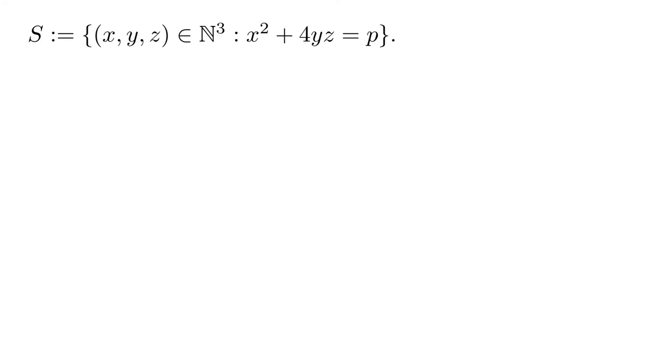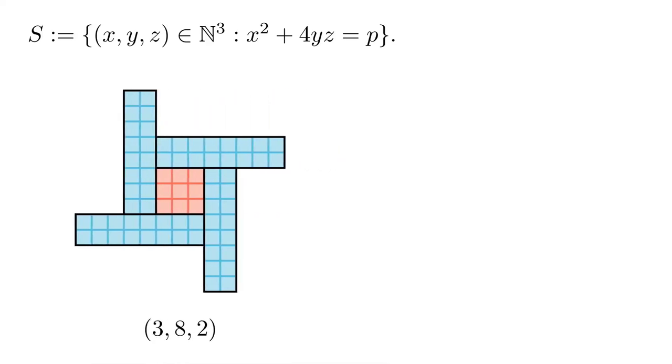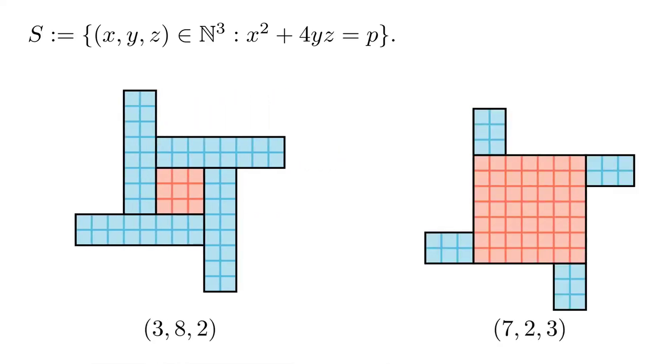So I've got this set S. It's triples of natural numbers, (x, y, z) with the property that x squared plus 4yz equals that prime p. And I want to interpret that set geometrically. So I build a square of side length x, an x by x square. That's the x squared term. And then around this square, I'll place four rectangles. These rectangles are y by z rectangles. So the four rectangles correspond to the 4yz term. So I've put down p squares. I've got x squared, the red square in the middle. And then I've got four rectangles, the 4yz term. So this is the triple (3, 8, 2). But I'd get the same exact shape, right? The outline would be exactly the same if I tried to build the (7, 2, 3) triple out of a 7 by 7 square and four 2 by 3 rectangles.